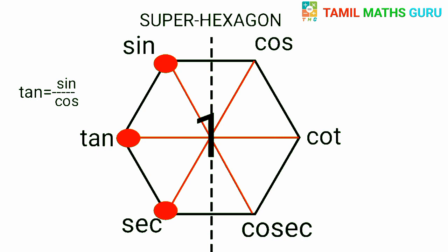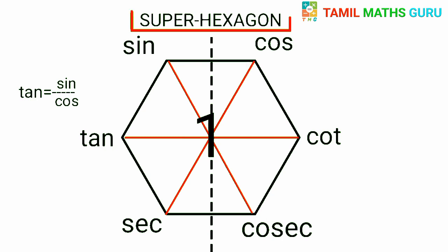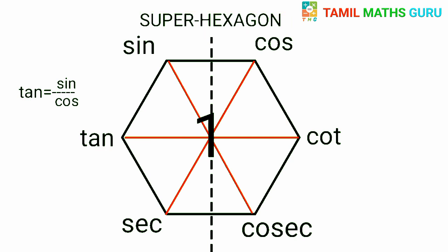If we take the base, we will convert formulas on the left side — which has three vertices — and on the right side, there are three trigonometric ratios. Similarly, if we take the base, we will convert formulas on the right side.